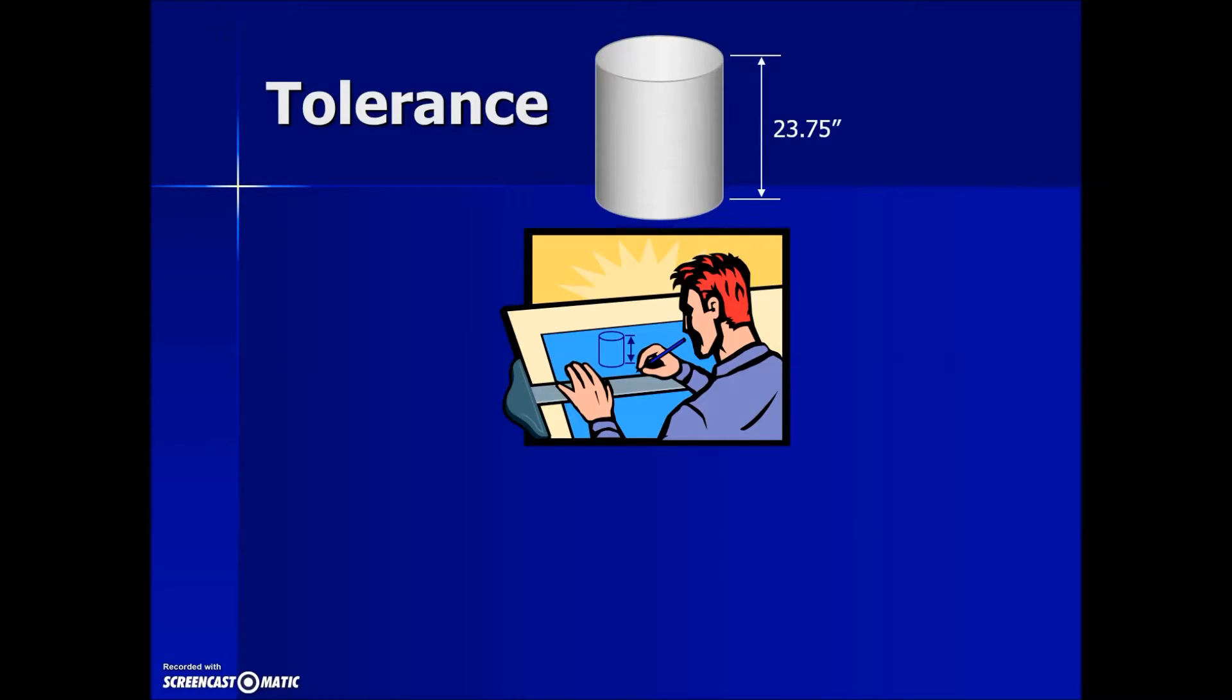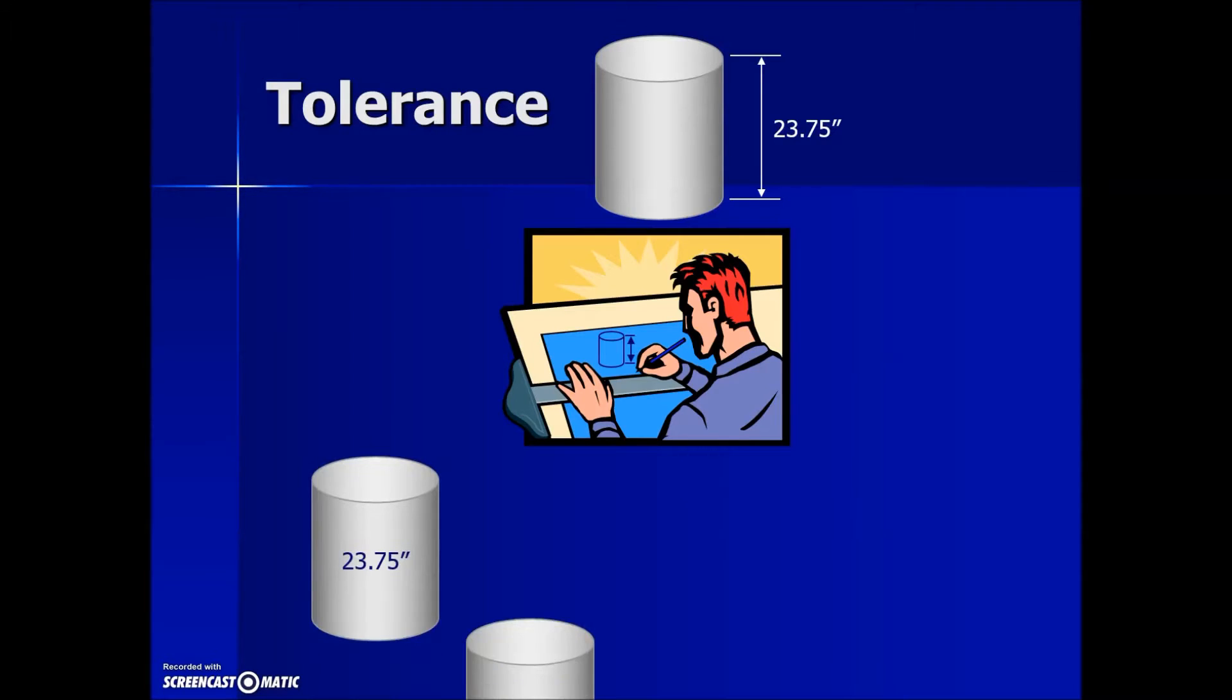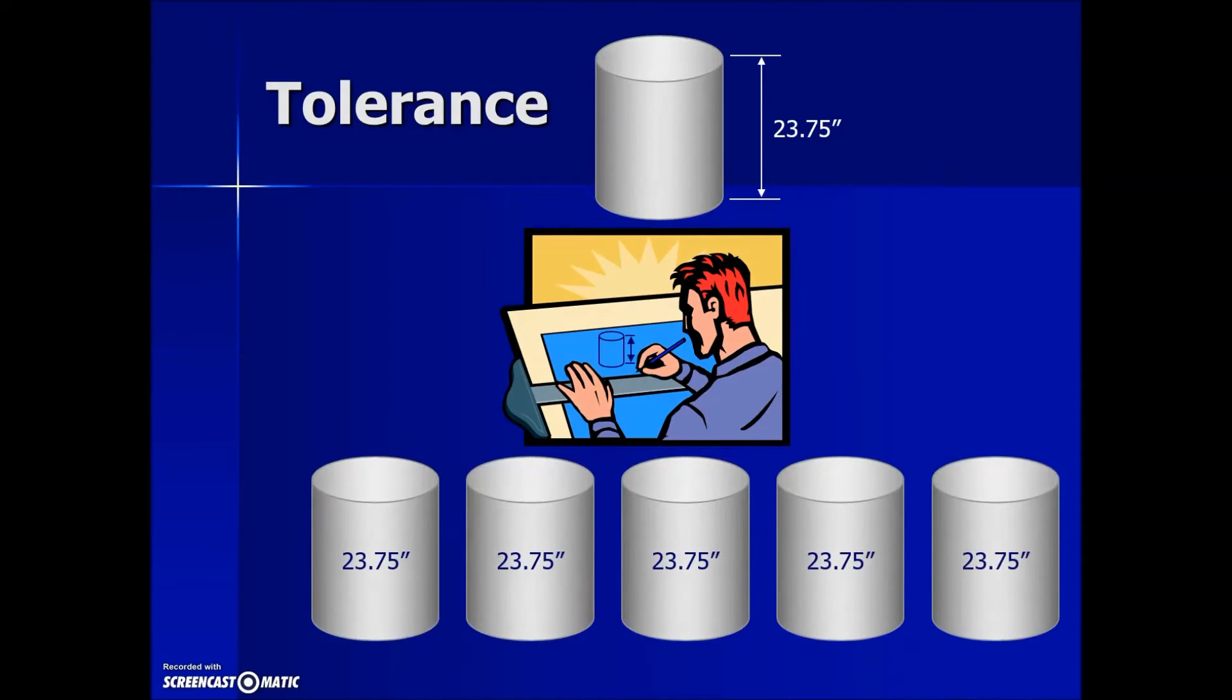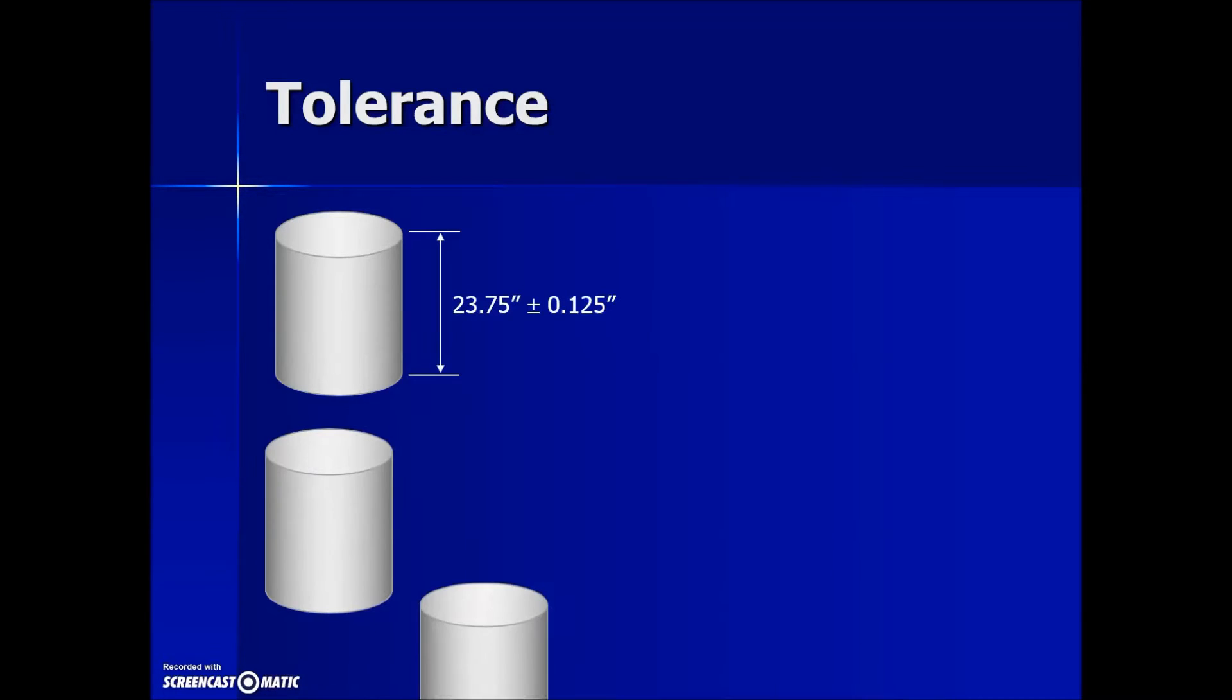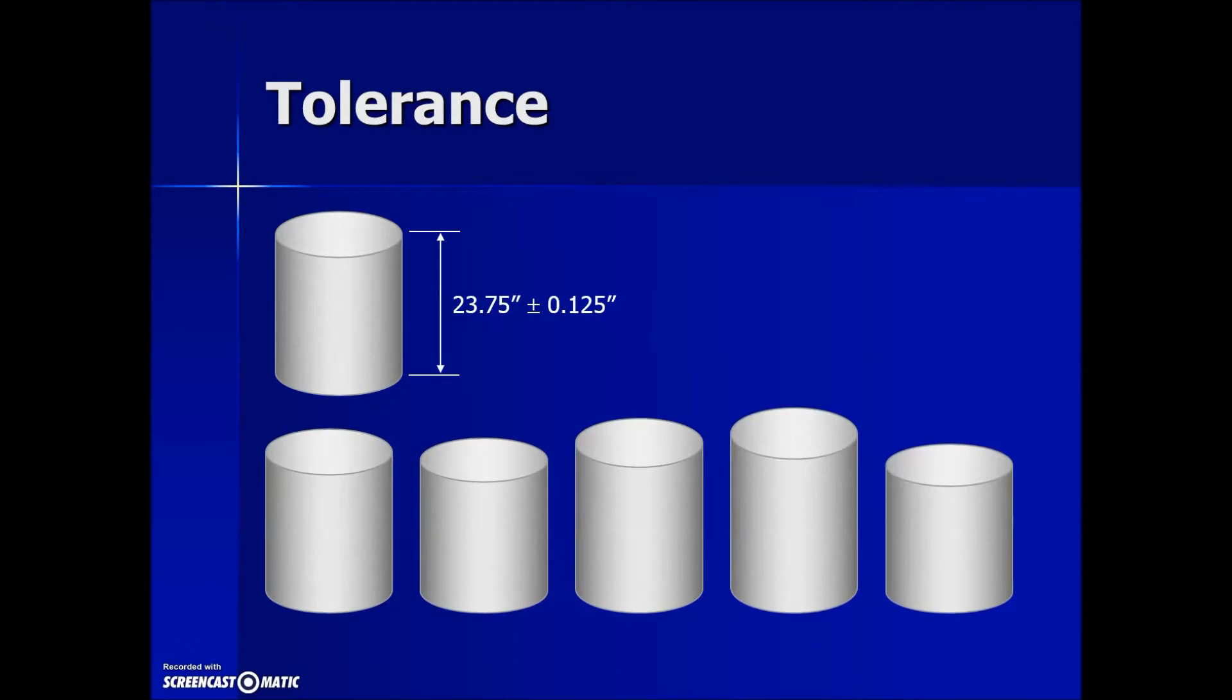If we have a component that needs to have a length of 23.75 inches, in an ideal world that's exactly what we would get. In reality though, actual production of any product or operation of any system involves some inherent variations without significantly affecting functioning systems and machines.